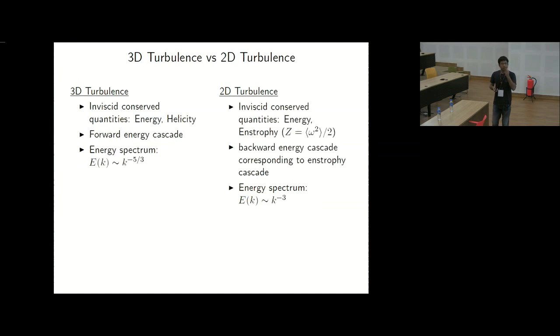3D turbulence is like a flow past a grid. If you go a bit away from the grid, the flow becomes messy and random. That is a good example of 3D turbulence. 2D turbulence, you take atmospheric turbulence, that is 2D turbulence. Now in 3D turbulence, let's define some inviscid conserved quantities. When the viscosity is zero, there are some quantities which are conserved. So in 3D turbulence, it is energy.